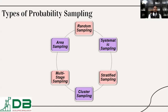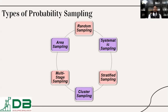Area sampling: in some research, we select participants area or location-wise. For example, in a nationwide study in Bangladesh, we can go 64 district-wise. From each district, we can select somebody from a metropolitan area, somebody from a village area, somebody from a divisional city, somebody from a suburban area, and somebody from an urban area. This type of area-based selection process is called area sampling.